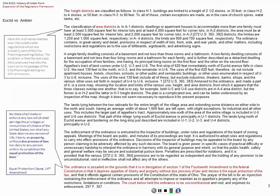The ordinance is assailed on the grounds that it is a derogation of Section 1 of the 14th Amendment to the Federal Constitution and that it deprives the Ambler Realty Company of liberty and property without due process of law, and denies it the equal protection of the law, and offends against certain provisions of the Constitution of the State of Ohio. The prayer of the bill is for an injunction restraining enforcement of the ordinance. The lower court held this ordinance to be unconstitutional and void and enjoined its enforcement.